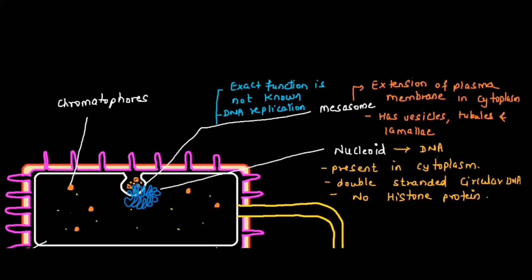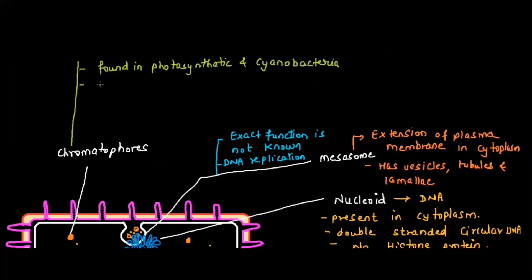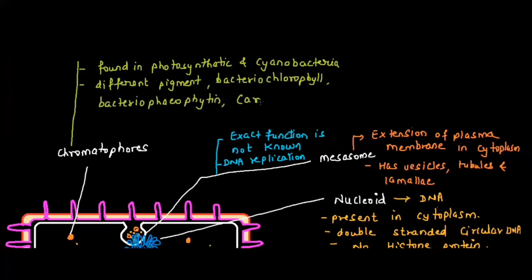In the cytoplasm, you will also find chromatophores. Chromatophores are nothing but colored pigments that will give color to the bacterial cells. It is found in photosynthetic and cyanobacteria. There are different pigments present: bacteriochlorophyll, bacteriopheophytin, and carotenoids.